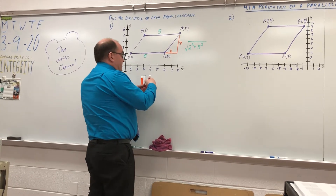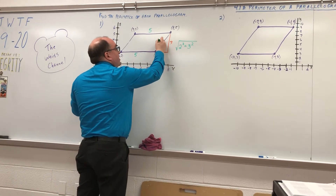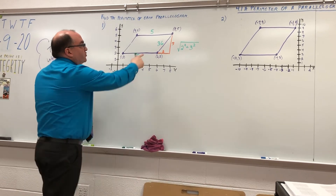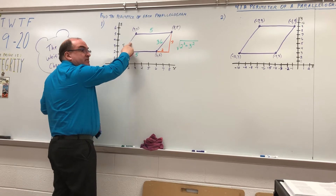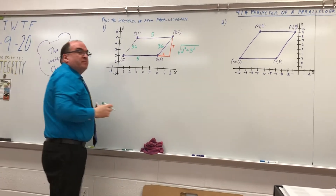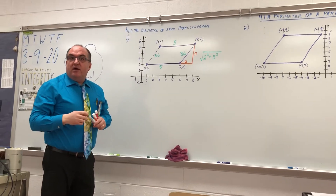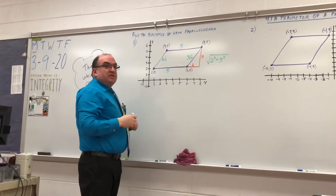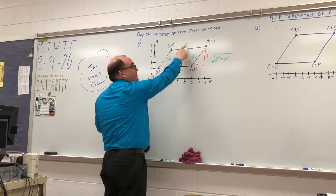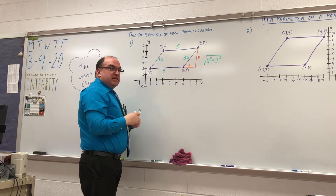So right here is 3.605. We're going to say 3.605. If this side is 3.6, this side is also 3.6. So now, how do we find the perimeter? We add all the sides: 5 plus 5 plus 3.6 plus 3.6 equals 17.2.